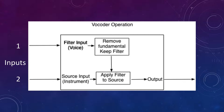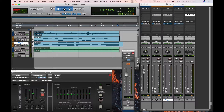The vocoder takes the voice input, removes the fundamental frequency information, and keeps the formant information to become the filter. It then applies that filter to the source input. The result is something that sounds like a speaking or singing musical instrument, or a robotic or synthesized voice.